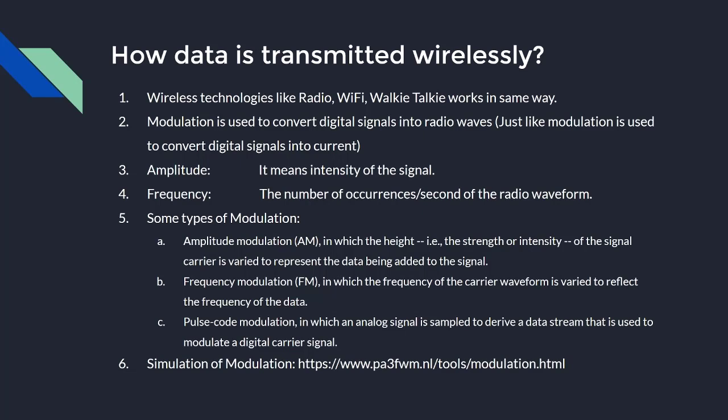The receiver uses the amplitude or intensity of the signal, or the frequency — meaning the number of occurrences of that waveform per second — to identify the transmission. If you tune the amplitude or frequency in your receiver device to match what the source is using to transmit, you will receive that signal.